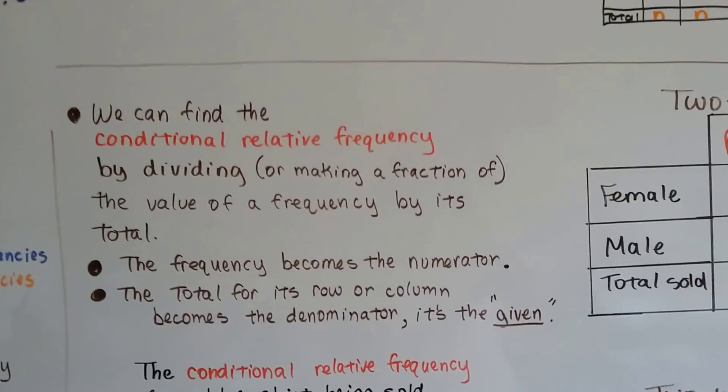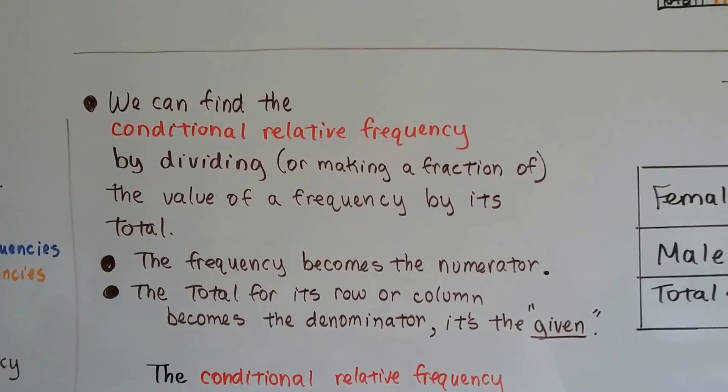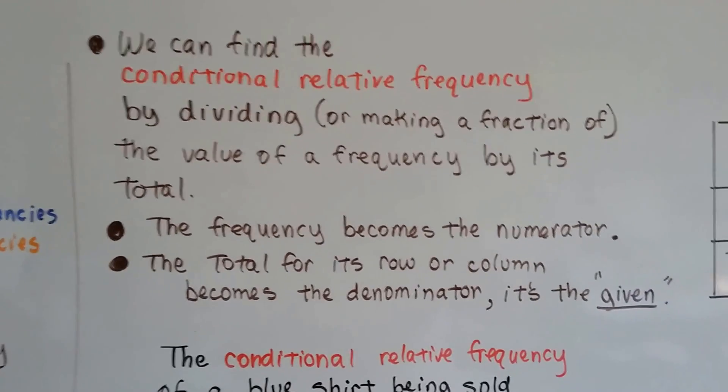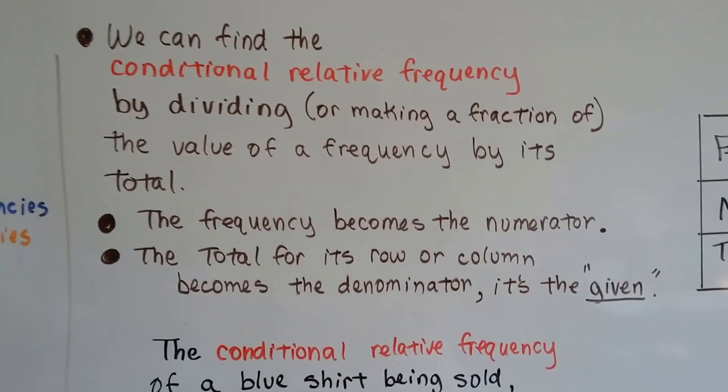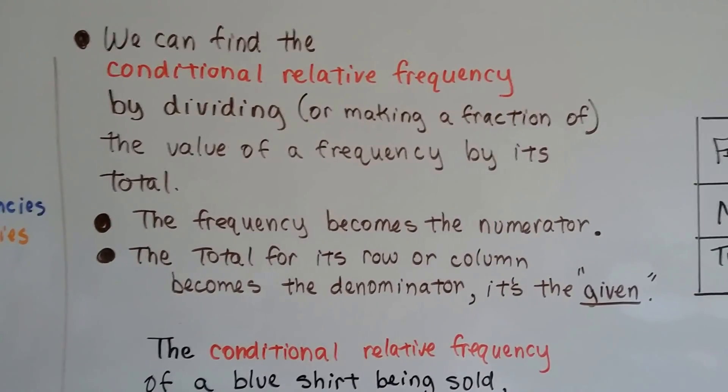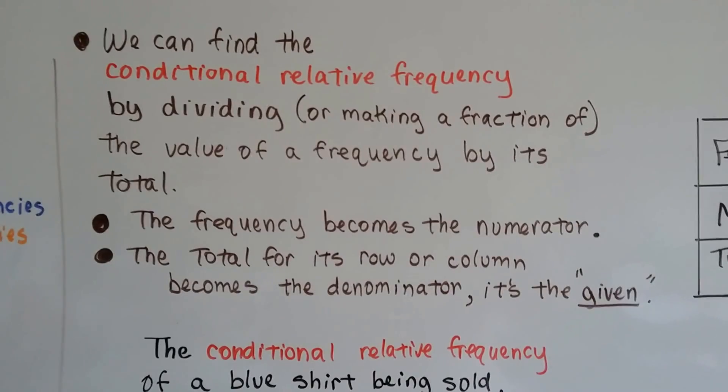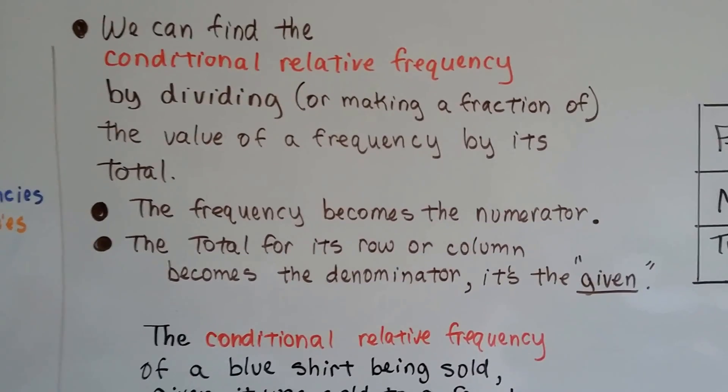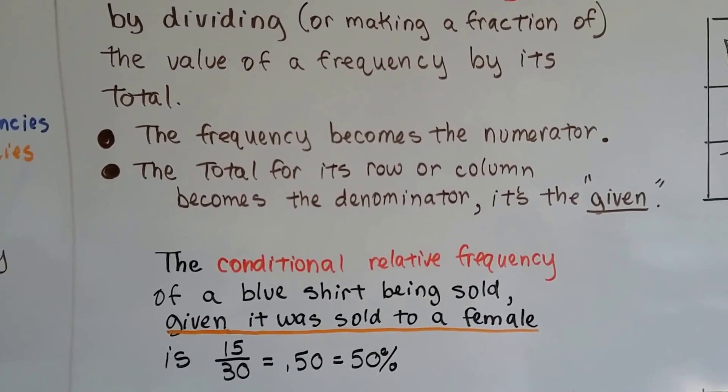So we can find the conditional relative frequency by dividing or making a fraction of the value of a frequency by its total for that column or row. The frequency becomes the numerator and the total for its row or column becomes the denominator. And it's the given. That really helps. It's the given.